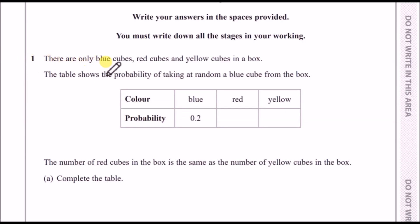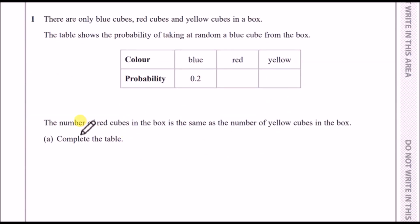Number one: there are only blue, red, and yellow cubes in a box. The table shows the probability of taking at random a blue cube from the box. According to the statement, the number of red cubes in the box is the same as the number of yellow cubes. To solve this, label both red and yellow as x, knowing all probabilities add up to one.